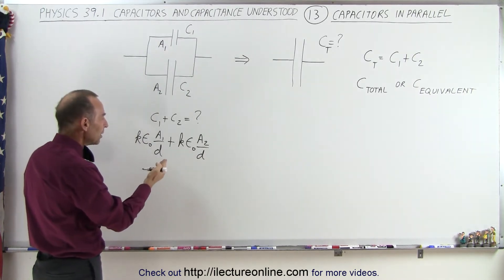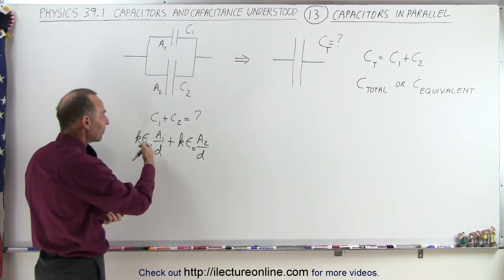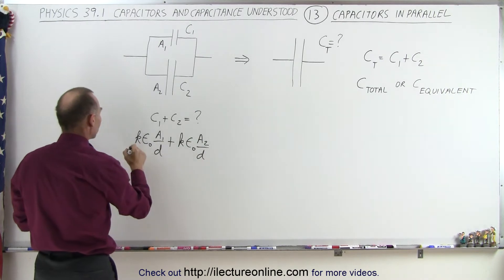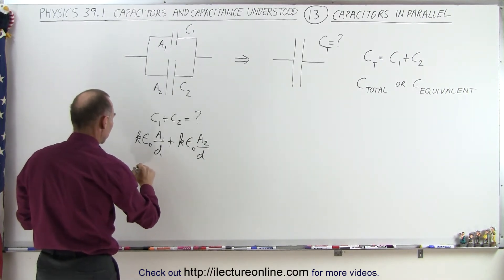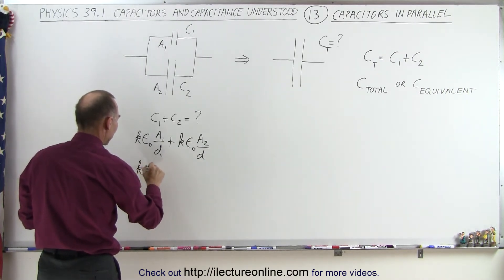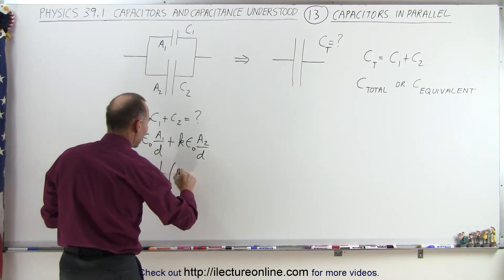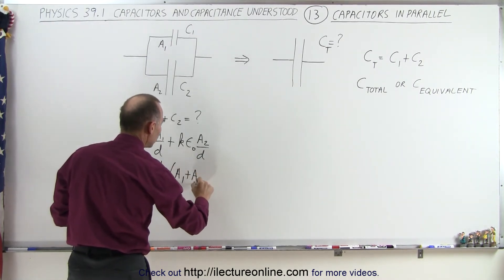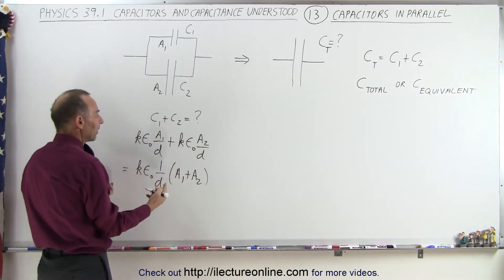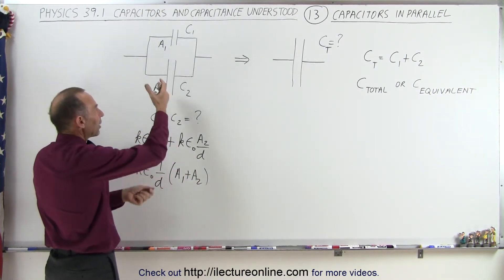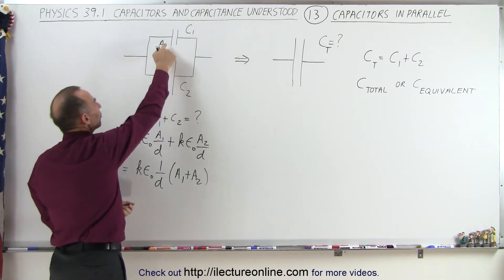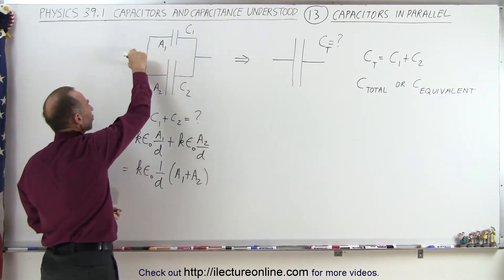Notice what we could do here—we could factor out everything except A1 plus A2. So this would be equal to K epsilon naught times 1 over D times (A1 plus A2). Here we can realize that it's simply the sum of the area of the plates. Since both of these plates are connected to the same part of the circuit,